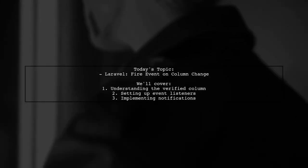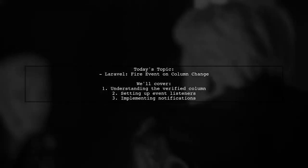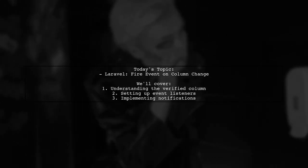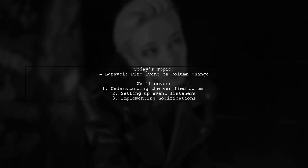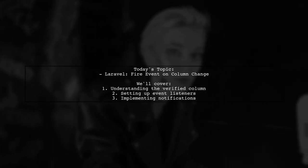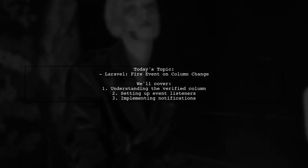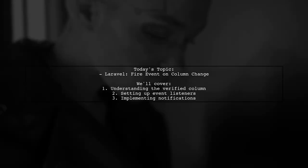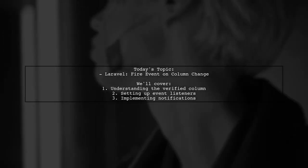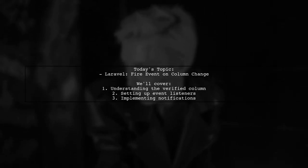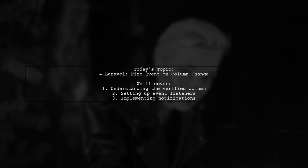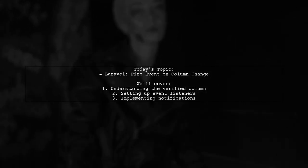Welcome to our Laravel tutorial. Today we're tackling a specific question that many developers encounter. Our viewer wants to know how to fire an event when a particular column in the user's table changes. Specifically, they have a Boolean column named Verified that defaults to False, and they want to trigger an event when it changes to True. This is crucial for sending notifications based on that change. Let's dive into how we can achieve this.